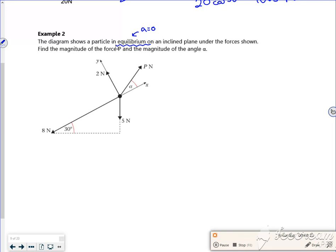So a diagram shows a particle in equilibrium on an inclined plane under the forces shown. Find the magnitude of the force P and the magnitude of the angle alpha.